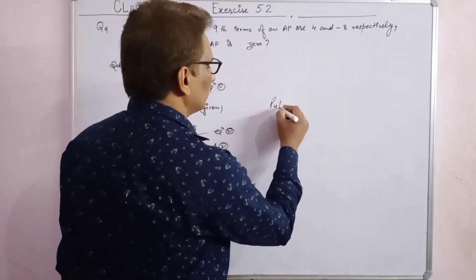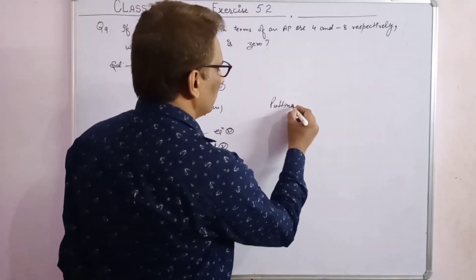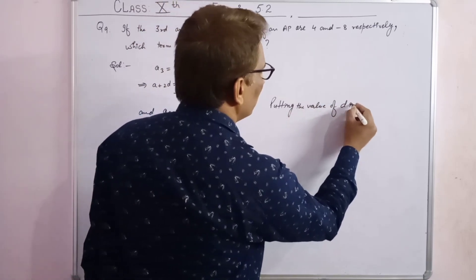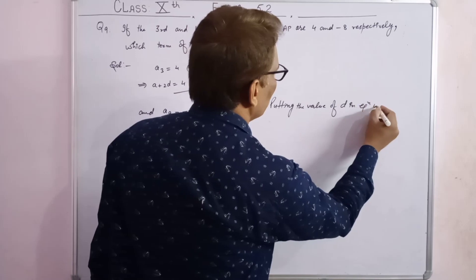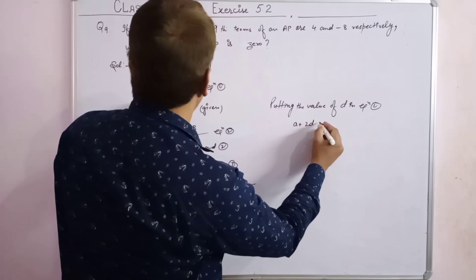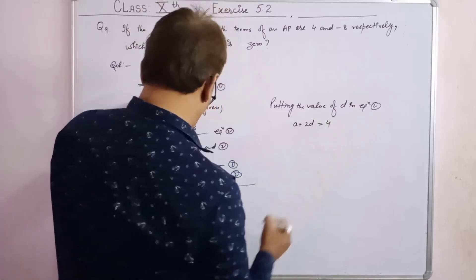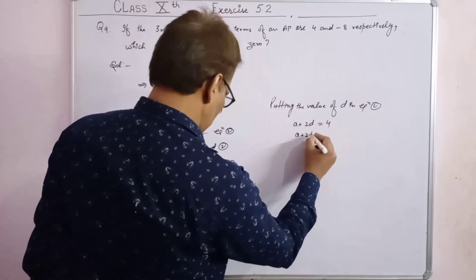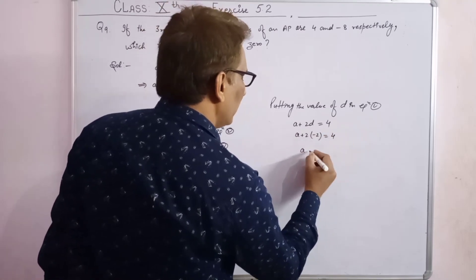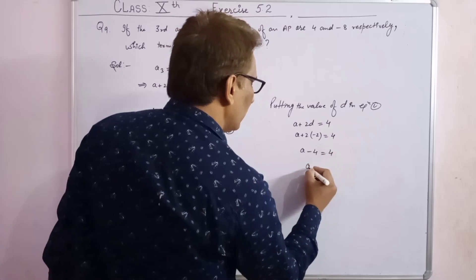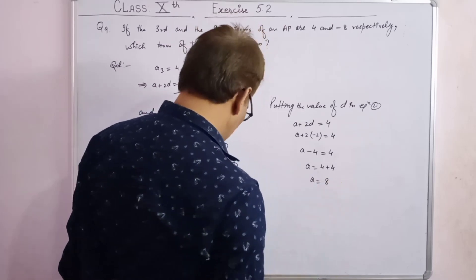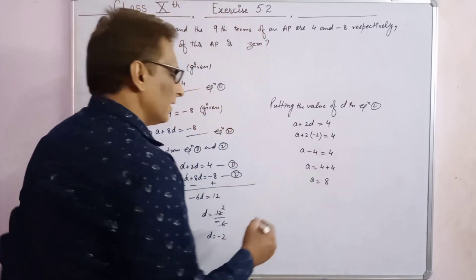Putting the value of d equals minus 2 in equation 1: a plus 2 into (minus 2) equals 4, so a minus 4 equals 4, giving a equals 4 plus 4 equals 8.